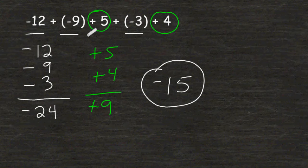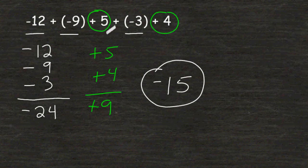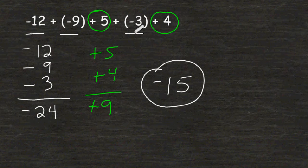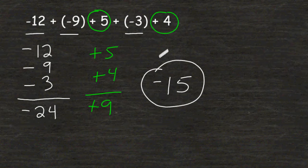Then moving forward from negative 21 would put you at negative 16. And then from negative 16, going backward a distance of 3 would put you at negative 19. And from negative 19, moving ahead 4 on the number line would put you at negative 15.